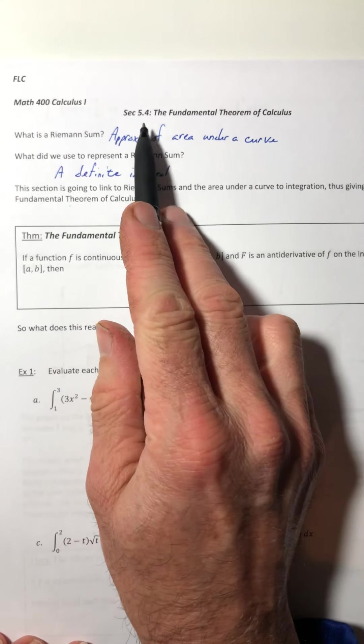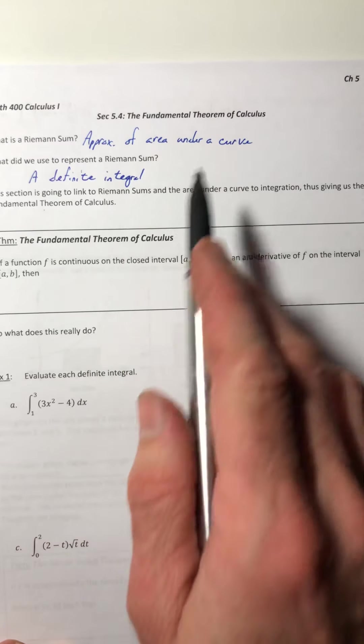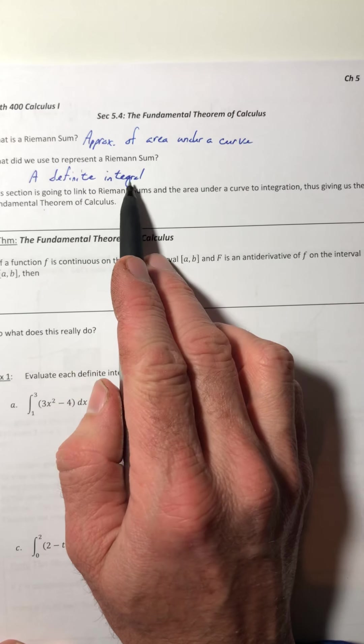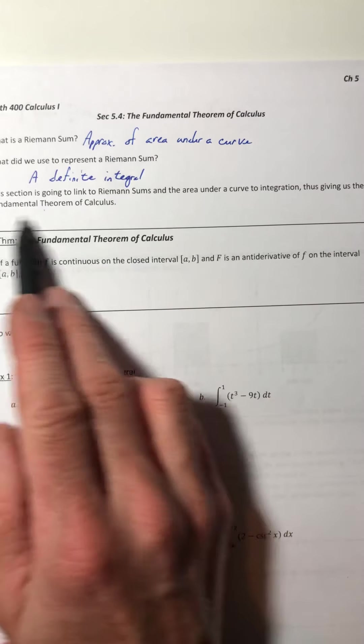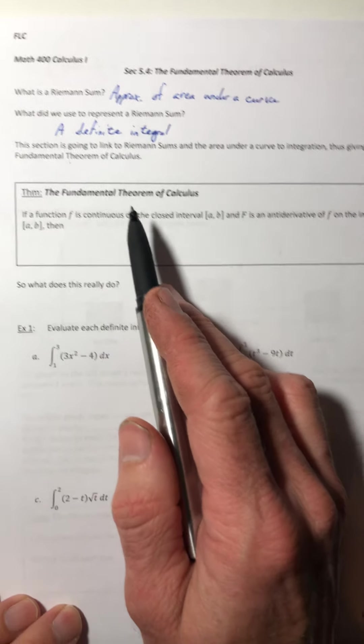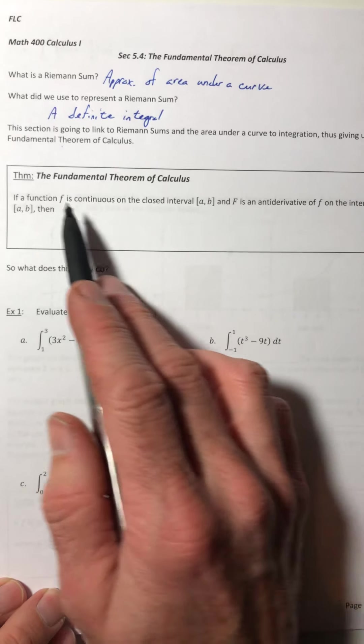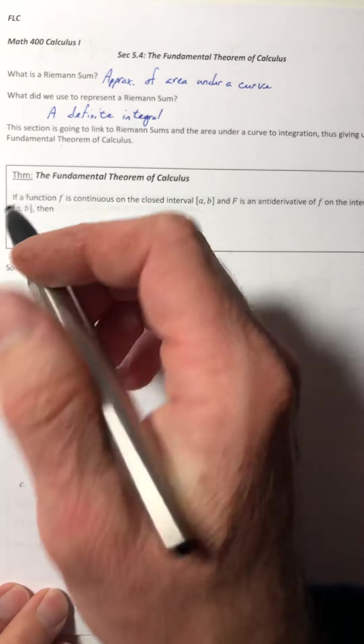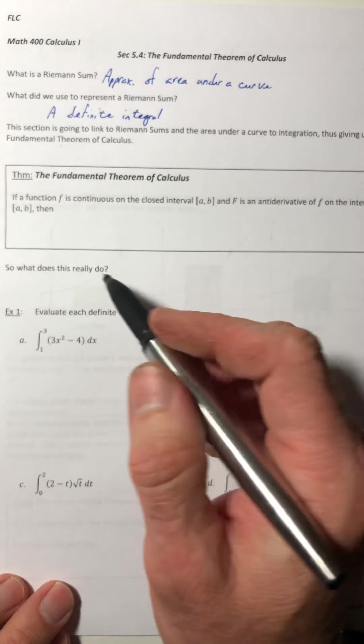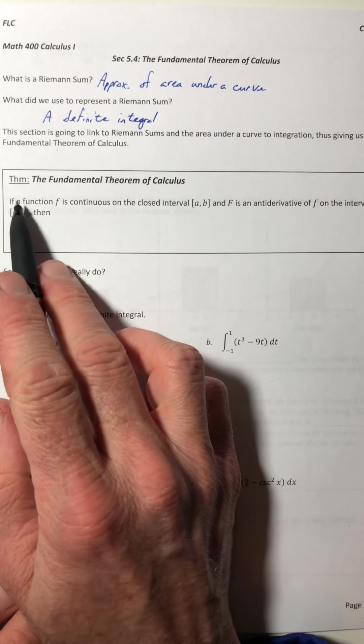So what this section is going to do, it's going to link the Riemann sums and the area under a curve to integration, thus giving us the Fundamental Theorem of Calculus. And some of you have already seen it and you've been waiting for this to happen. And others, you're going to like this too.